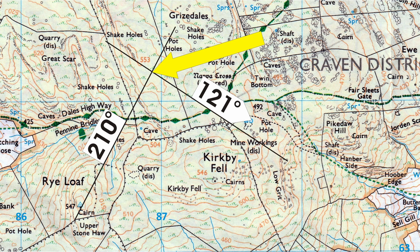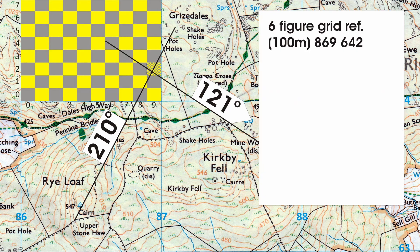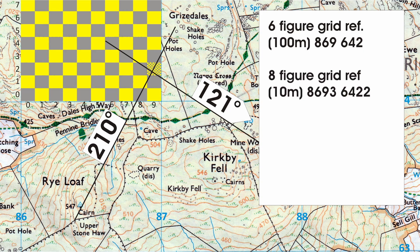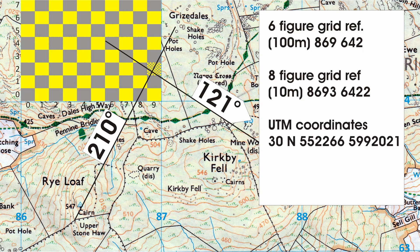If I need to tell somebody where I am, I can give them my UK grid reference, which is SD 86964 2 — that tells them my location to within 100 meters. Or if I want to be more precise, to within 10 meters, it would be SD 86964 22. Obviously only the UK uses UK grid references, so I can also give UTM coordinates, or if I was in the military, my MGRS — Military Grid Reference System. By using a resection you can let someone else know exactly where you are.